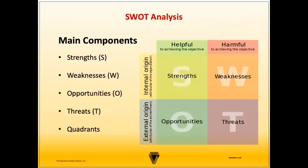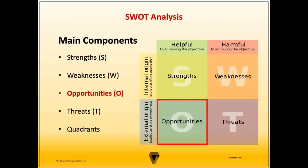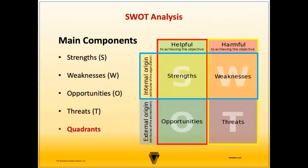The main components of a SWOT analysis include strengths, weaknesses, opportunities, threats, and quadrants. Now let's take a closer look at each of these elements.